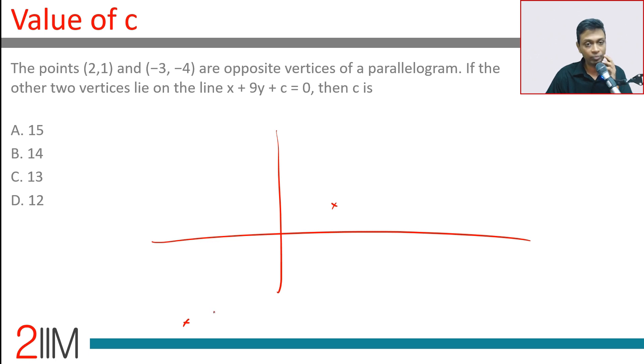That's tricky. x plus 9y plus c is either here or here, so it should be somewhere here. I think the other two vertices sit here. Remember, you don't need to know the line. There's only one property that we need to know for this.